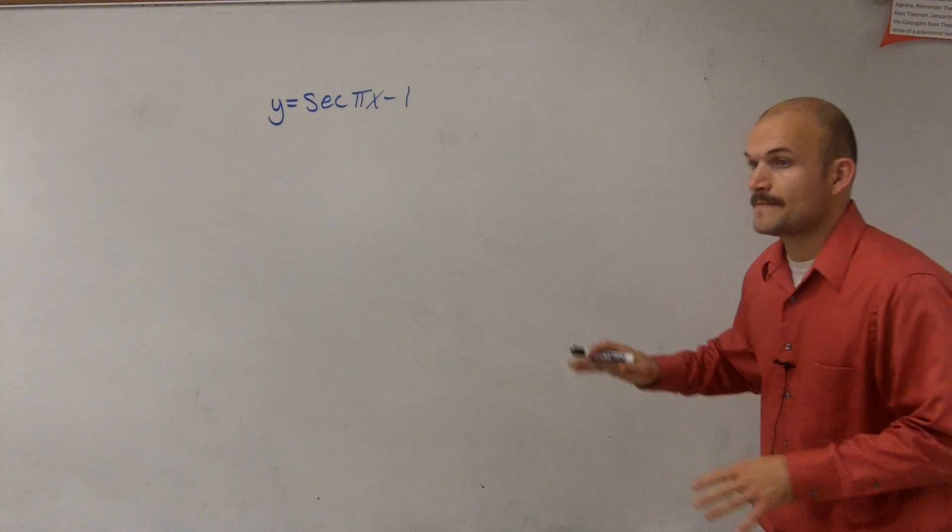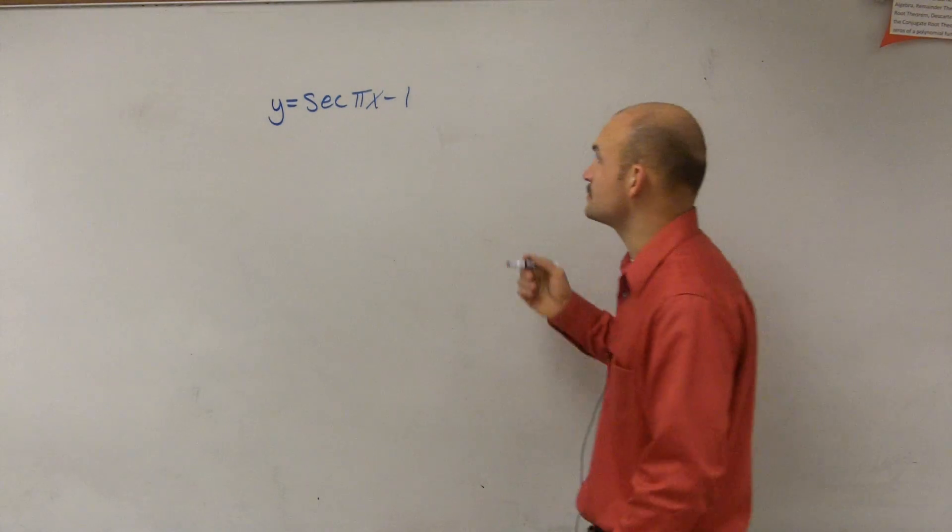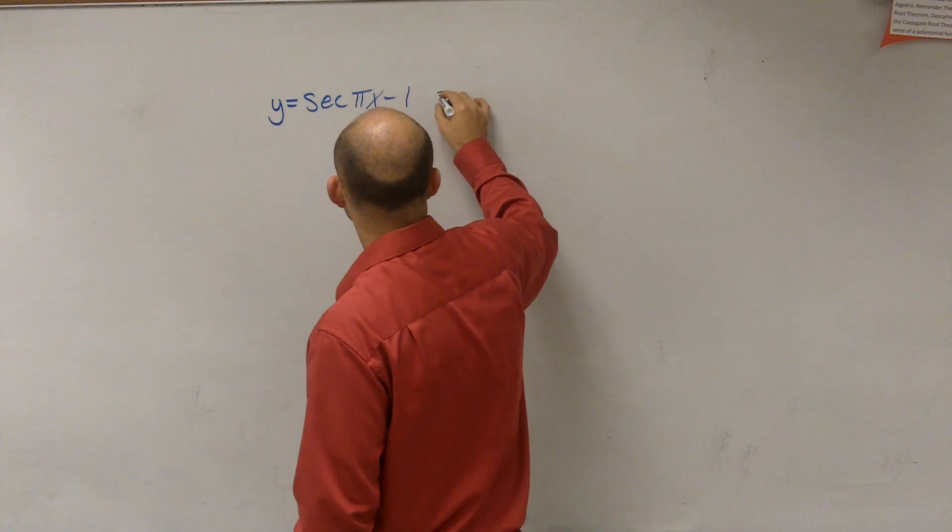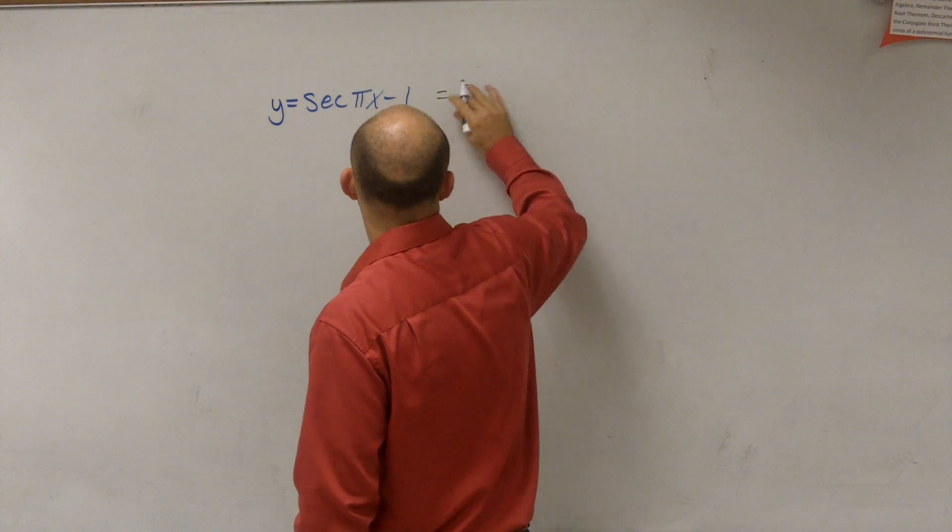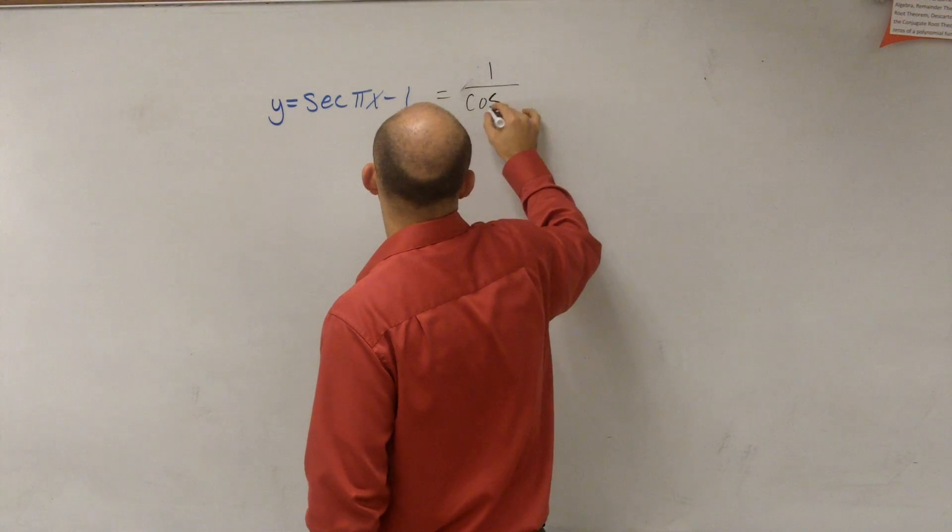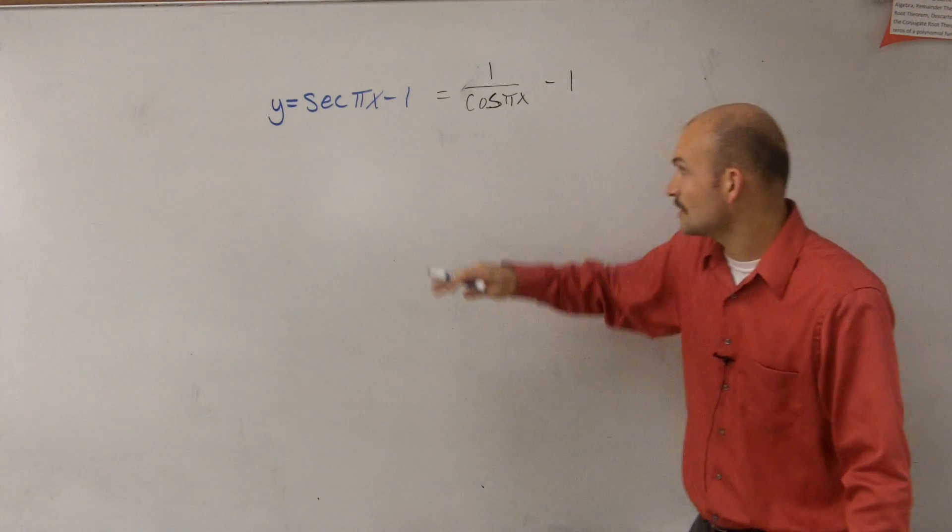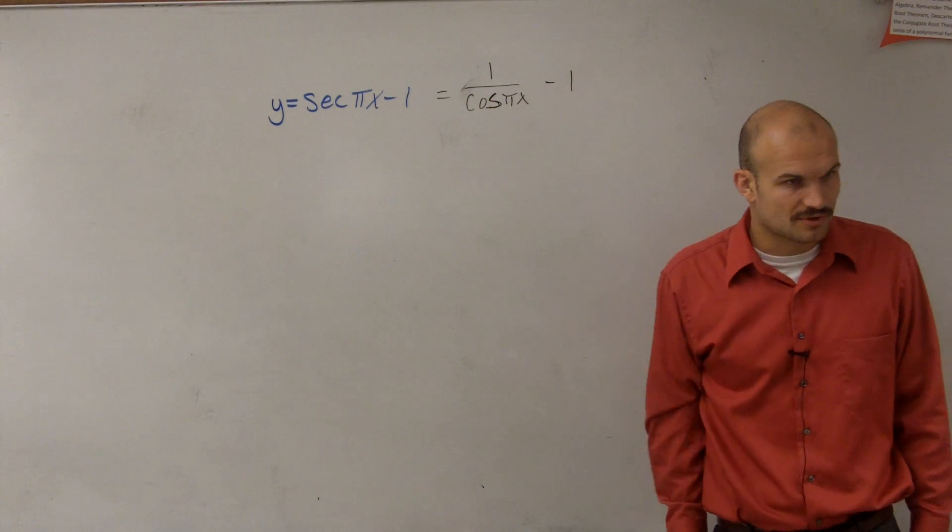The first thing we need to understand is that secant's a reciprocal of cosine. So therefore, this function can be rewritten as 1 over the cosine of pi x minus 1. These functions are reciprocals of each other.